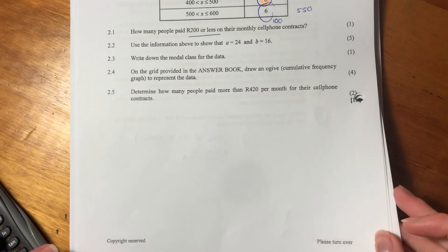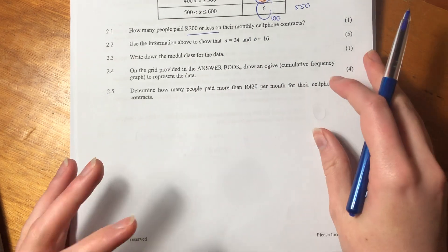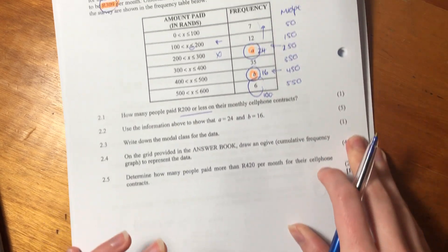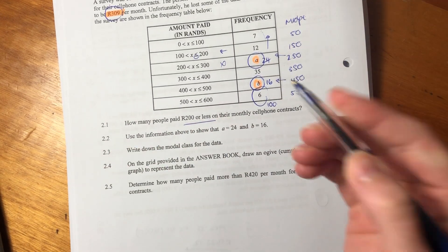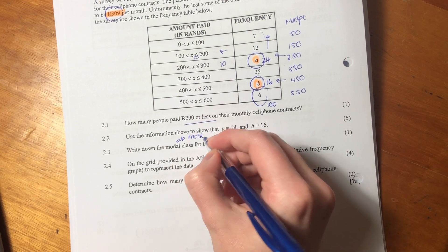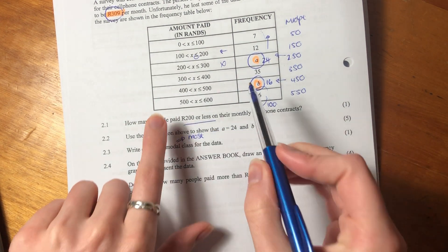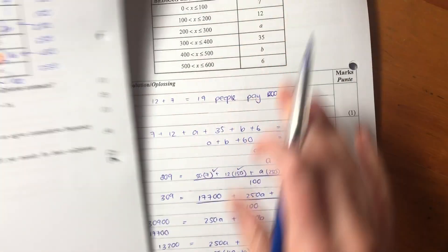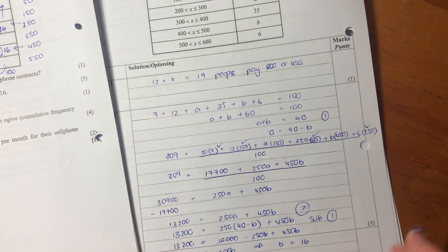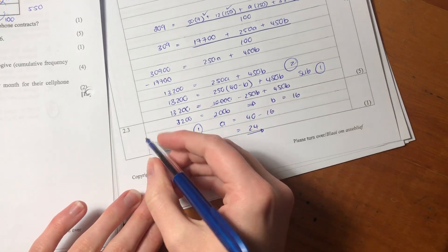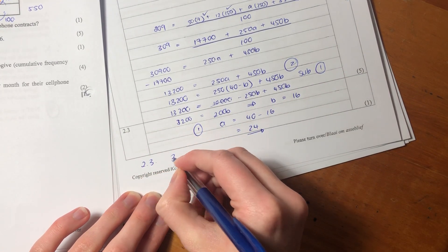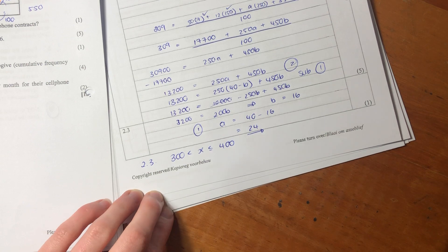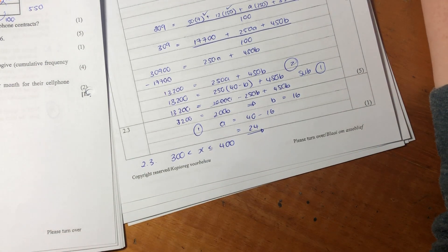Now I've used the whole space for 2.3, so we're going to have to squish it in there. It says: write down the modal class for the data. Let's write in these values here now so that we know what they are. Mode or modal means most. Where are most of the people sitting? Most of the people are sitting between 300 and 400 because 35 is bigger than any other frequency. So 2.3 is between 300 and 400, 400 inclusive.